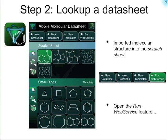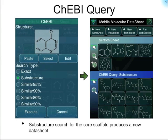The next step is to actually do something with the structure. We hit the Run Web Service button, which presents a list of available web services. We pick the Kibi web service, a database provided by the European Bioinformatics Institute. For the structure, we select from our Scratch Sheet, switch to a substructure search, and run it. Just like for the ChemSpider query, it sends off a request to the web service and comes back with a set of results integrated into the collection as a new data sheet called Kibi Query Substructure — several dozen molecules all based on the scaffold we searched for.